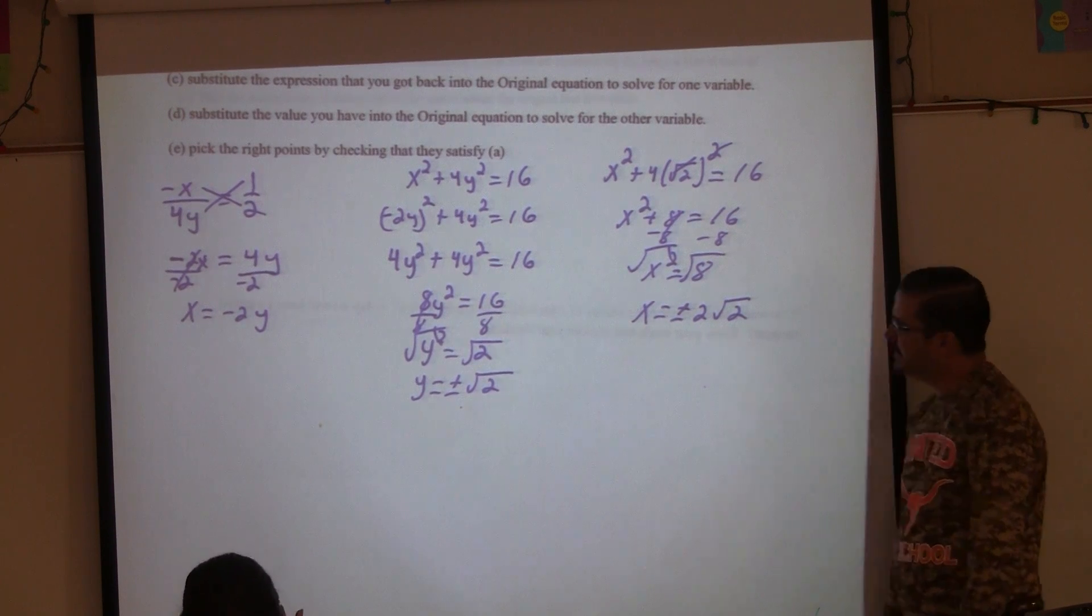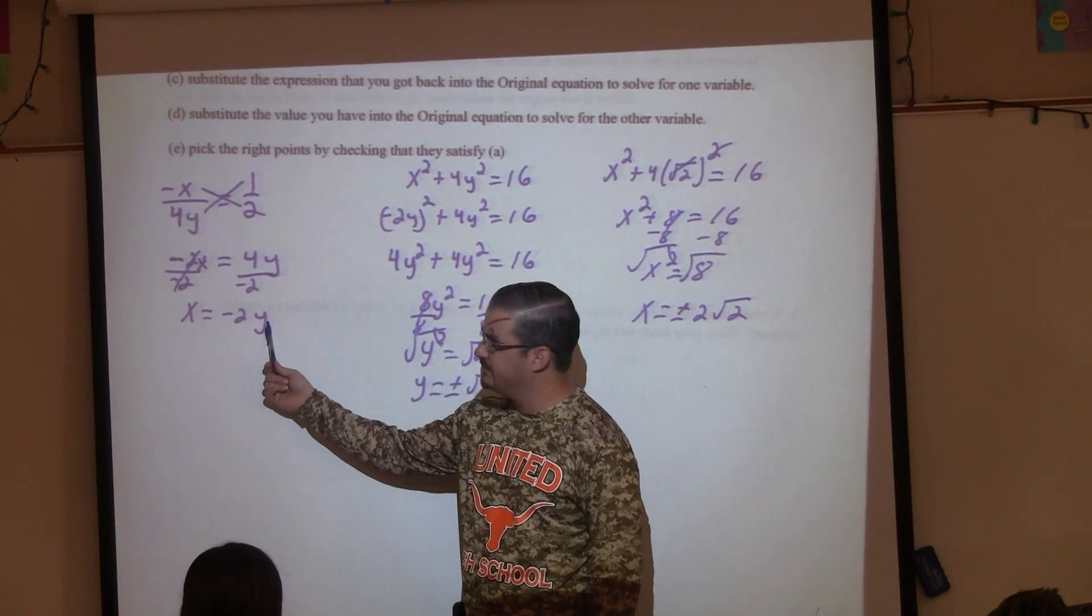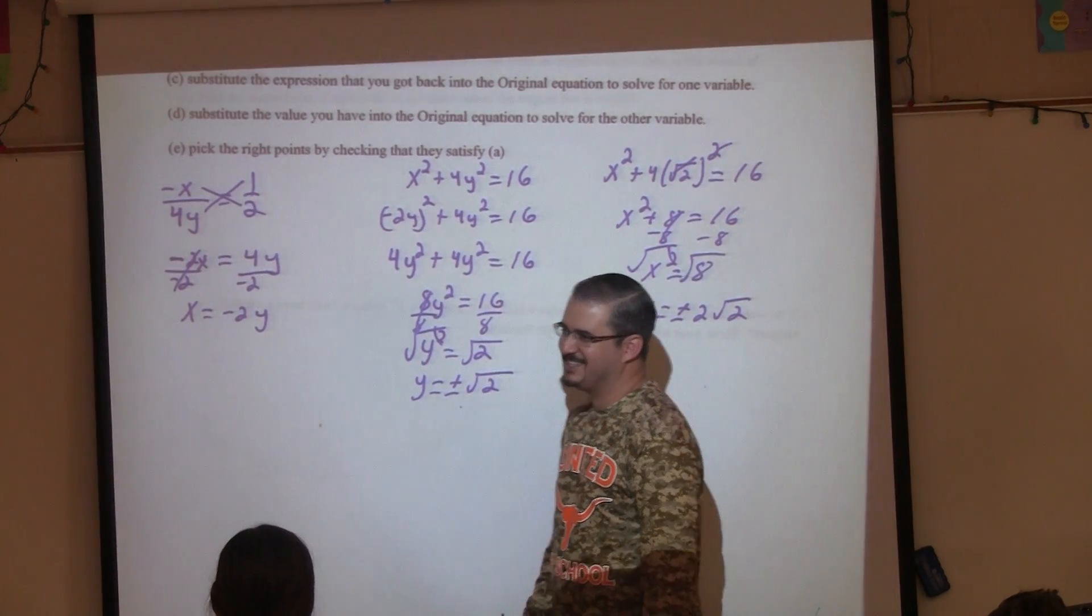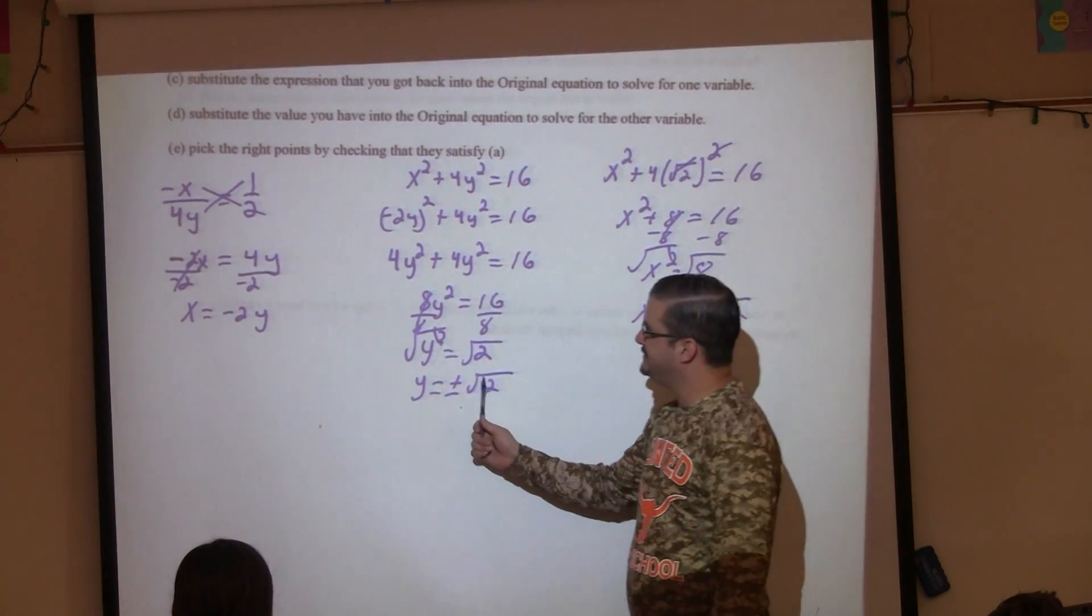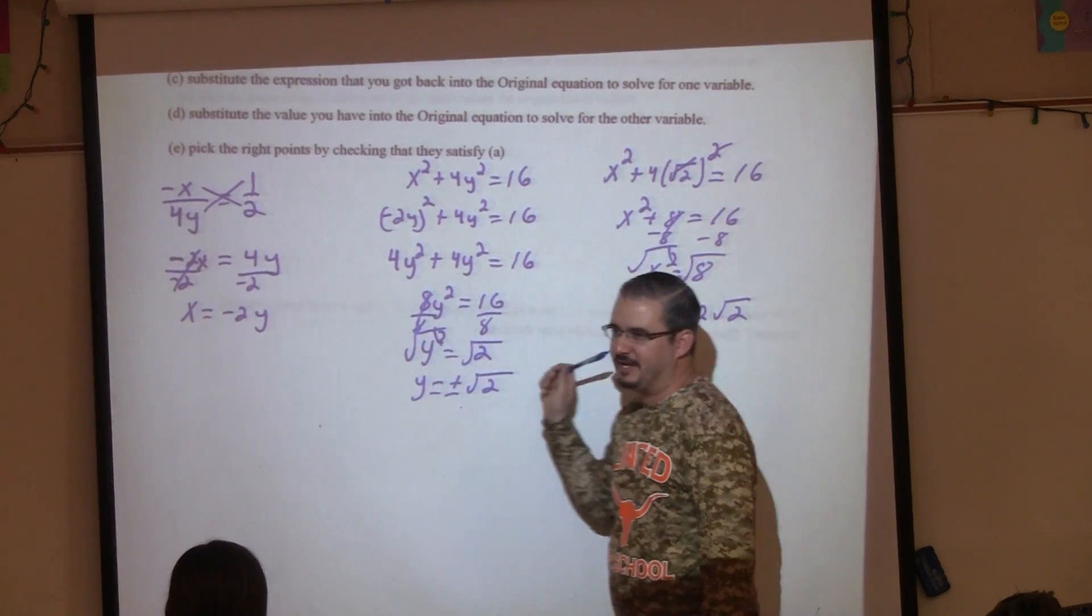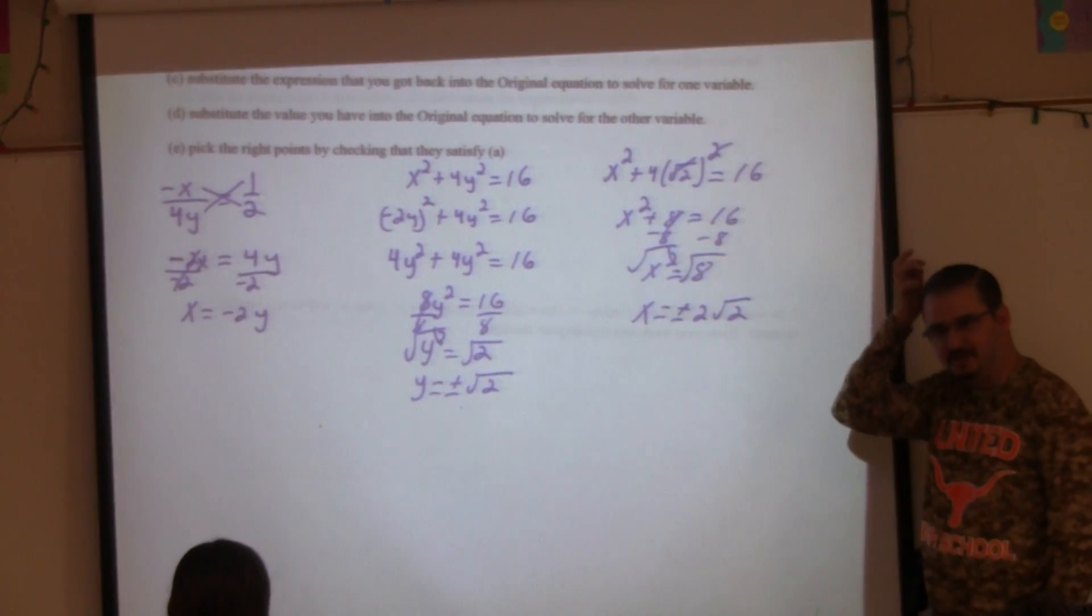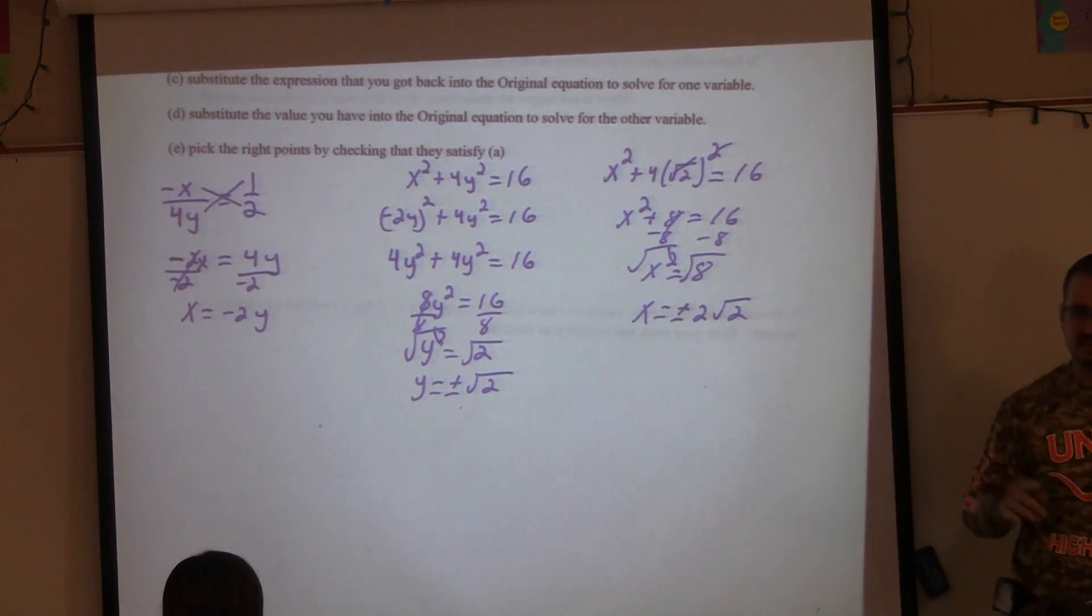Could I have gotten this answer also by plugging in this Y over here? Would you have been super off? No. What if I put the √2 there, would I have gotten the 2√2? Yeah, so we kind of did more work than we needed to. That's okay.